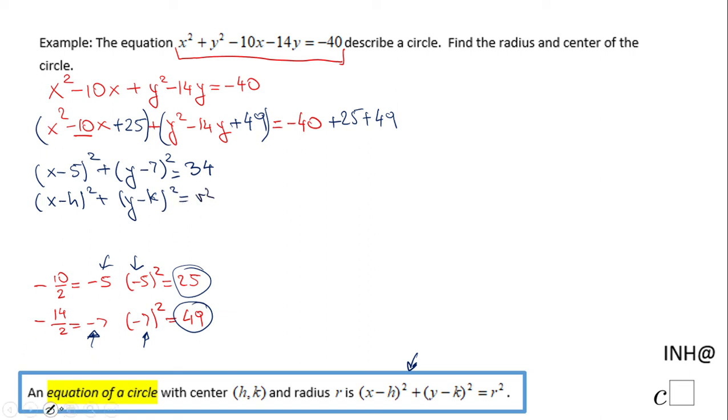Okay, if you notice, h is 5. Now you want to be careful. You want to have negative on x minus 5, and we have x minus 5 there, right? So it's a negative, so h is 5. The same story here, k will be 7. Again, we notice negative, so k is 7.